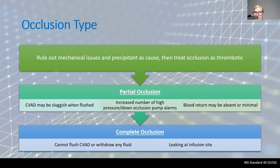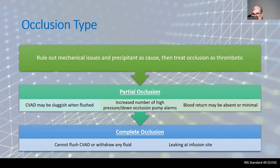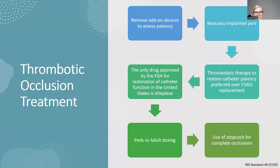When determining occlusion type, rule out mechanical causes first, then precipitant, then assume thrombotic. A partial occlusion means the line is sluggish but can still be flushed — there may be pump alarms and no blood return. You can instill alteplase for a partial occlusion. For a complete occlusion, a stopcock is used to create the negative pressure needed to pull the alteplase into the thrombus.